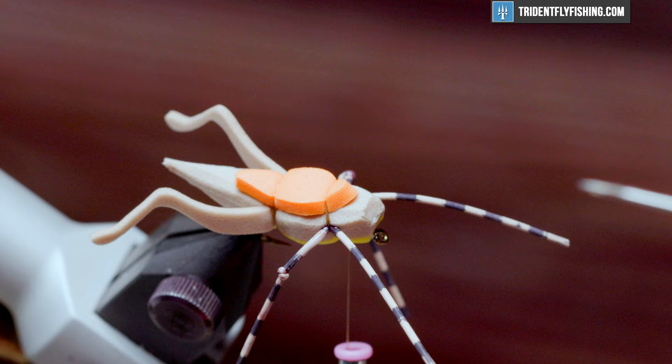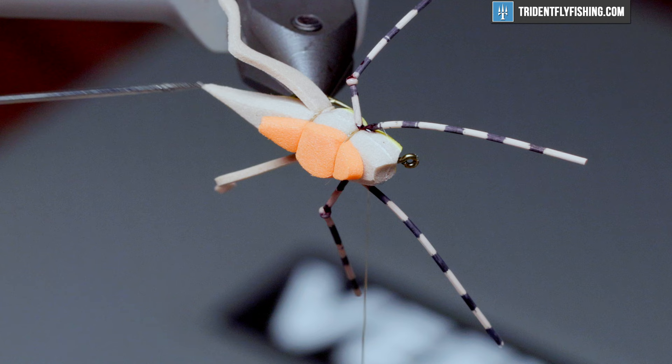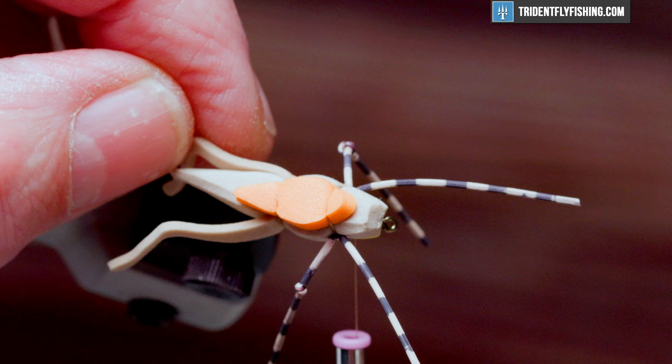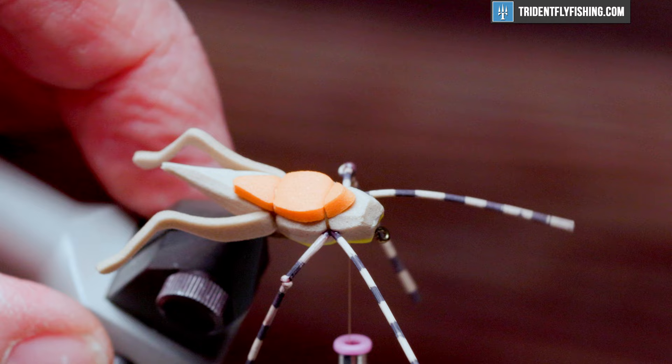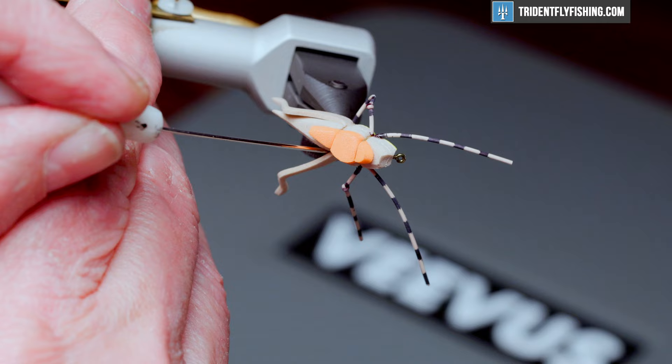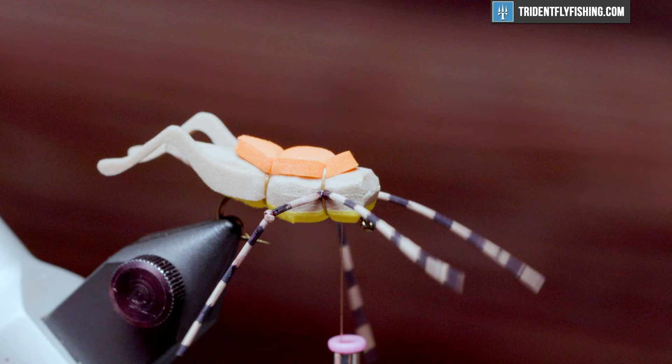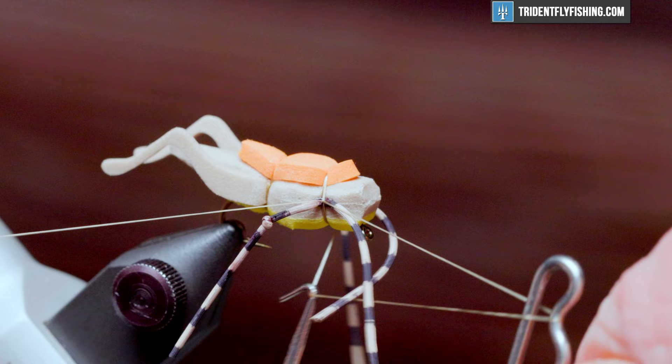And now because the rear legs are kind of splayed out the way they are, on our bodkin we'll put just a little bit of that zap-a-gap and sneak that in behind the leg. And then we can push the leg up against the body. And it'll stay there. Once again, just a little bit of that zap-a-gap behind the leg. Push it up against the body. Give it a second or two to set. There. So now we're ready to do a whip finish on the fly.